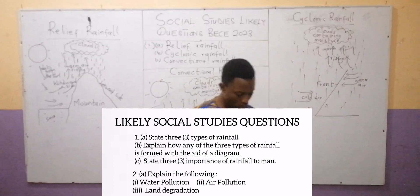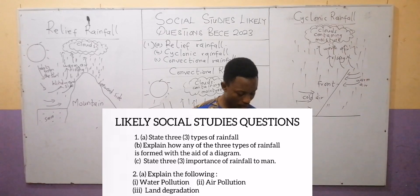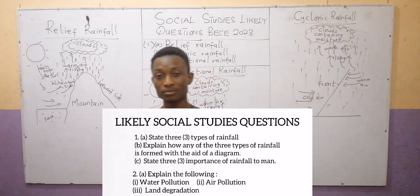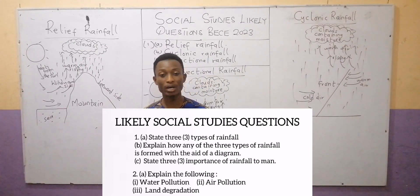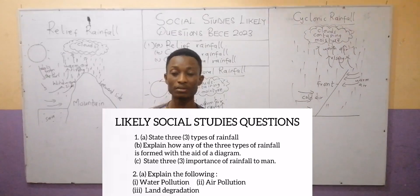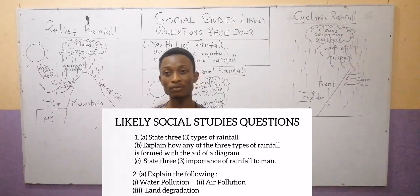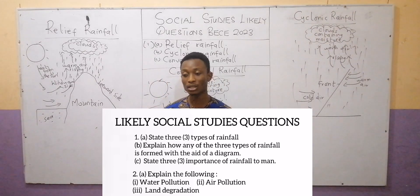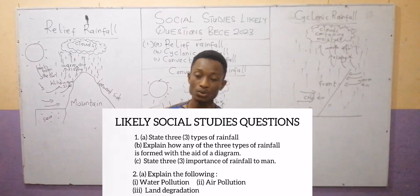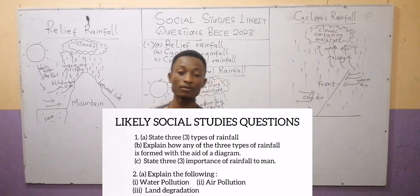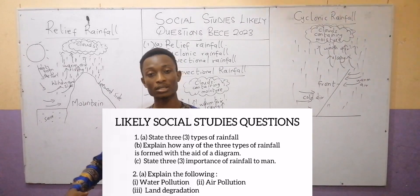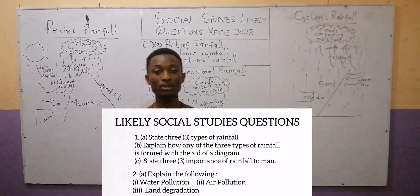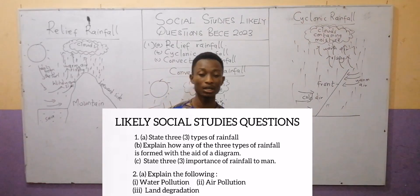The next question: identify two causes and effects each of the three types of environmental degradation. For water pollution, causes include: one, improper or poor fishing methods — such as the use of DDT or fertilizers for fishing. Two, the release of industrial pollutants into water bodies; some industries discharge unwanted substances into water bodies, making them unsafe for aquatic life and human beings.